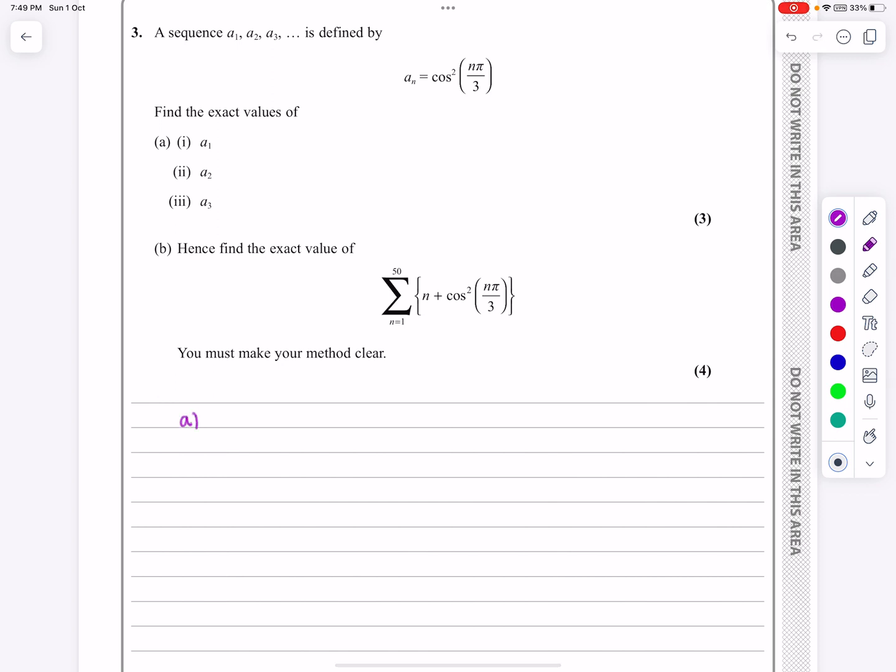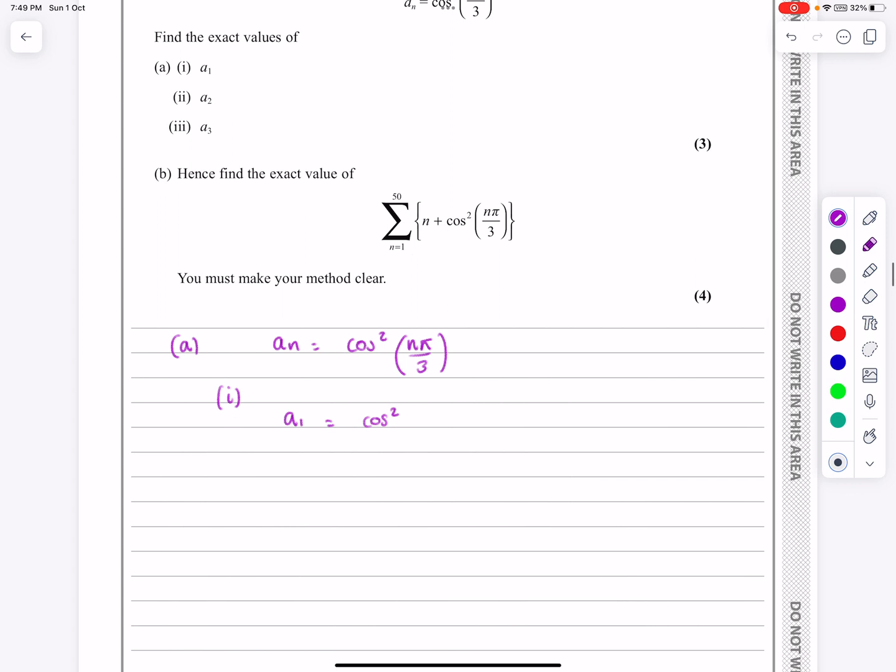Let's look at part a. a to the n is equal to cos squared n pi over 3, and then what they want us to work out is a1, a2, and a3. Well, a1 is going to be cos squared 1 pi over 3, so cos squared pi over 3. Well, cos pi over 3 is equal to a half, so cos squared pi over 3 is a half squared, and that works out to be equal to a quarter.